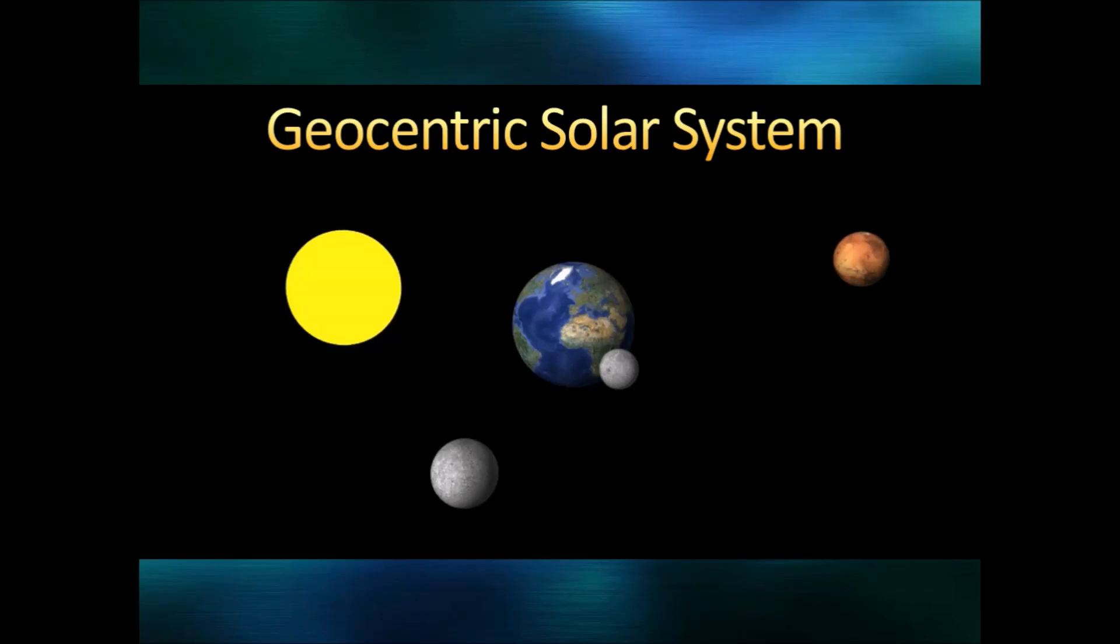Way back in the ancient Greek and Roman times, people believed that the Earth was at the centre of the universe. Everything else revolved around it, the other planets, the moon, the sun and the stars.